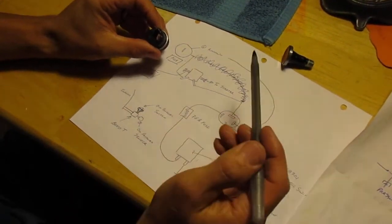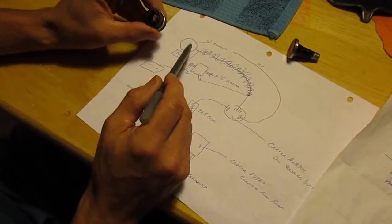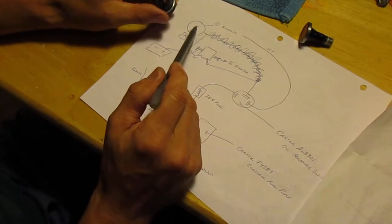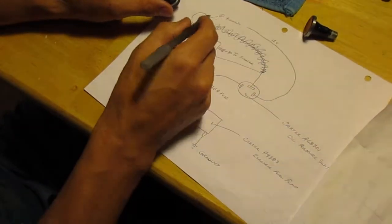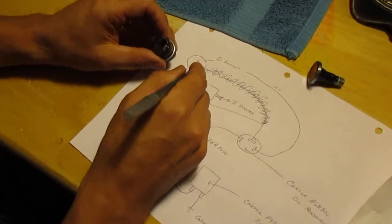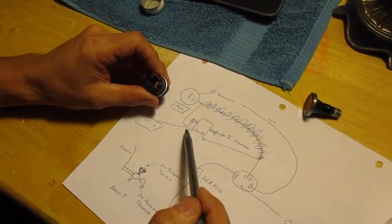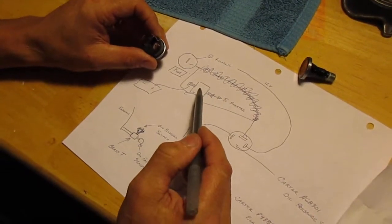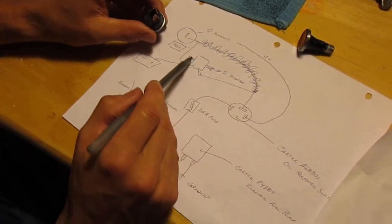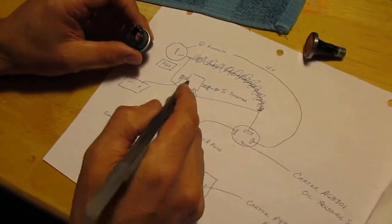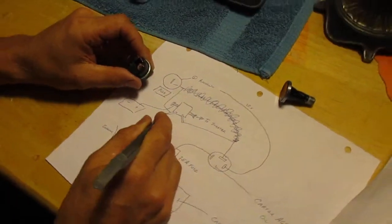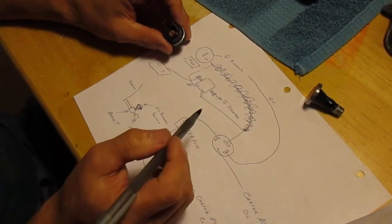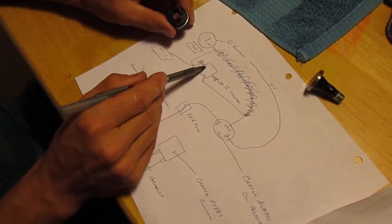It comes over to the starting solenoid, and this is just a big relay. The starting solenoid, by activation of this conductor here, this prong on the solenoid, allows current to flow over through the starter—a lot of current.